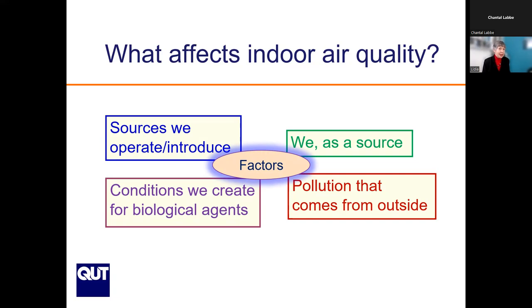This includes carbon dioxide, particles containing pathogens, and pollution that comes from outside. On top of this are many different factors — for example, how we operate the building or meteorological factors which affect what comes inside. This is the whole complexity of what affects indoor air quality.